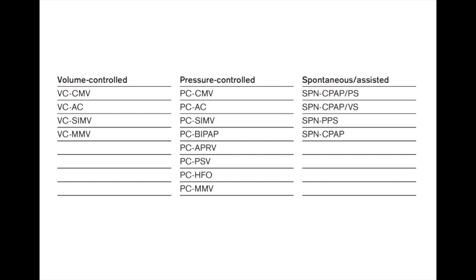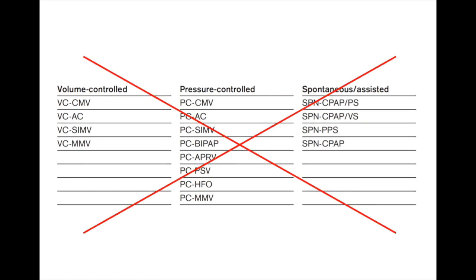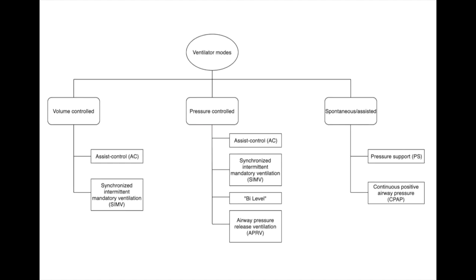When it comes to understanding the different modes on the ventilator, it is super confusing — it's like alphabet soup out there. This is a list of acronyms from one of the major vent manufacturer manuals, and as you can see there are countless different settings. That graphic more accurately represents what you need to actually know, or how you might want to think about different ventilator modes.